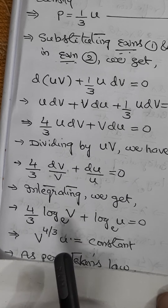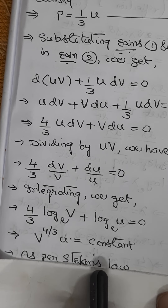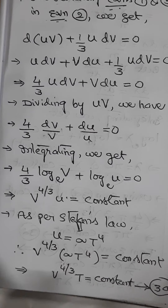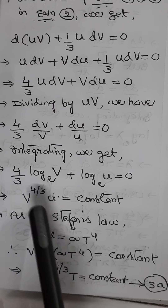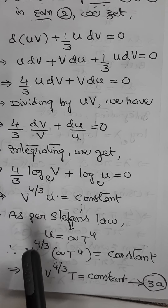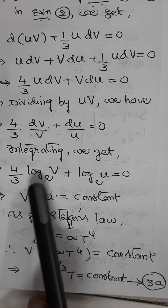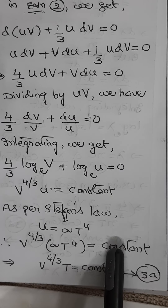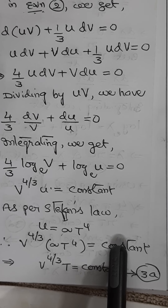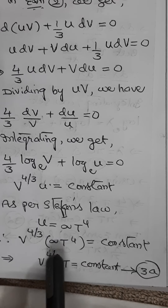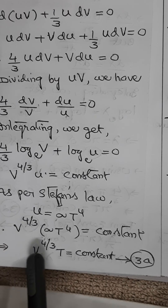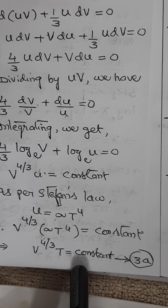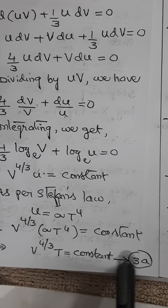Now we apply Stefan's law: u = σT⁴. Substituting into V^(4/3)·u = constant gives V^(4/3)·σT⁴ = constant. Since σ is a constant, V^(4/3)·T = constant. Let this be equation 3A.